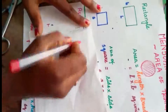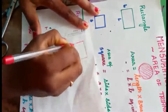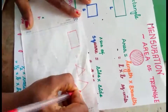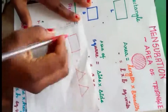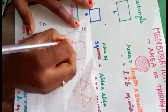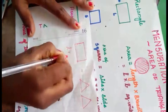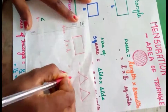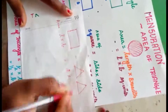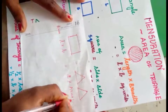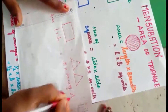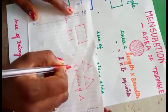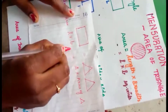Hence we can say we have taken a rectangular paper and we have got two similar triangles. So we know that area of rectangle is length into breadth, and area of rectangle is equal to two times the area of triangle. When multiplication is on one side, it becomes division when moved to the other side.